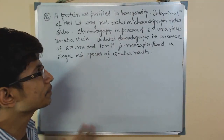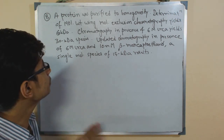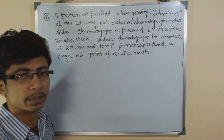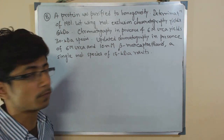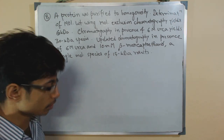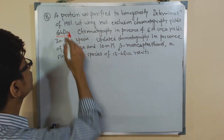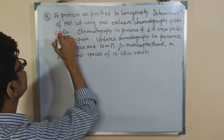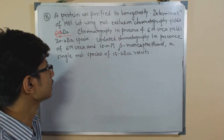A protein was purified to homogeneity and the determination of molecular weight using size exclusion chromatography was performed. After this size exclusion chromatography, what we get is a 60 KD protein.